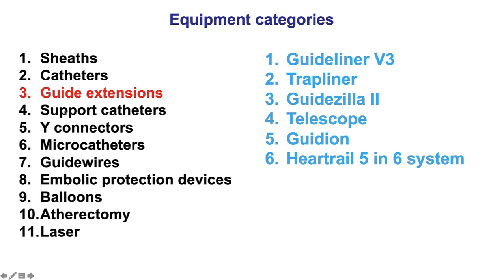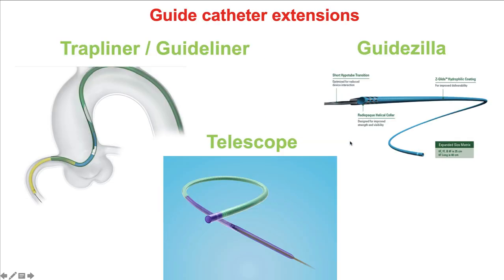It is the third of the 22 categories of equipment, and there are four of them currently available in the United States as of 2020: the Guideliner, the Trapliner, the Godzilla, and the Telescope. There are more available internationally, such as the Gwydion and the HeartRail 5 and 6 system.